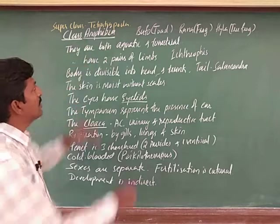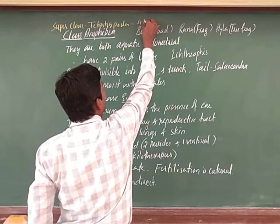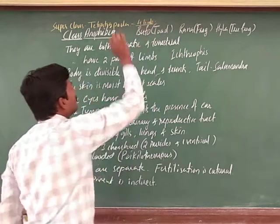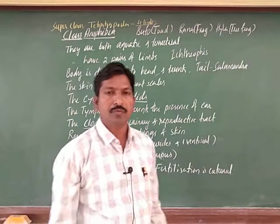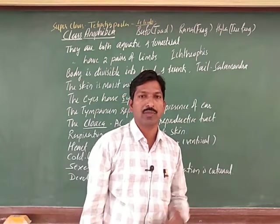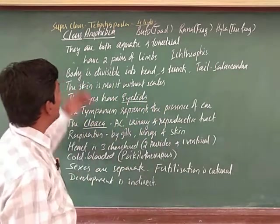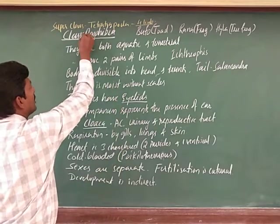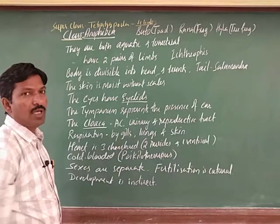Tetrapoda means the presence of four legs, four limbs. This is the unique feature, though somehow exceptional limbless animals may also be present. Now let us discuss the general features of Class Amphibia, which is the first class of superclass Tetrapoda.